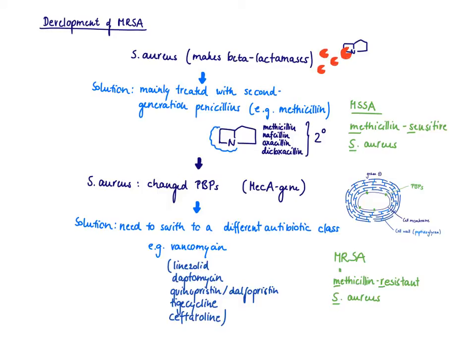We always knew that Staph aureus is very good at making beta-lactamases. Beta-lactamases are this little enzyme that the bacteria produce that destroy the beta-lactam ring. As soon as the beta-lactam ring is destroyed, obviously this antibiotic is not going to work anymore.